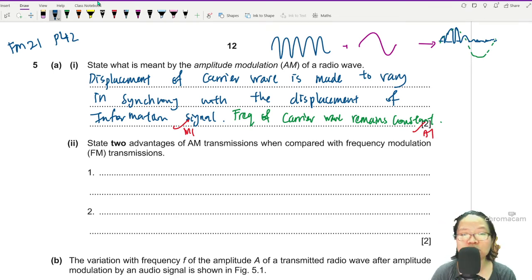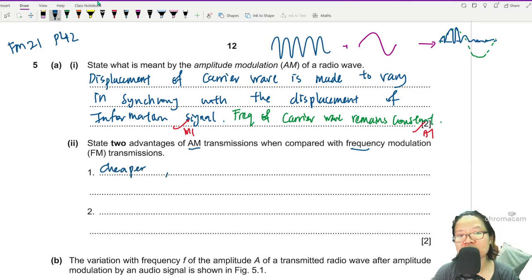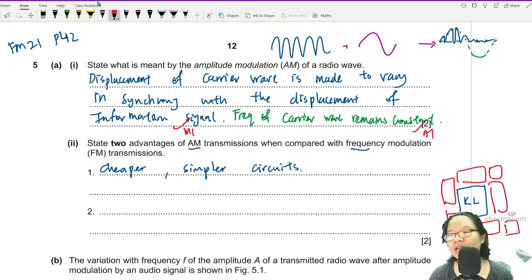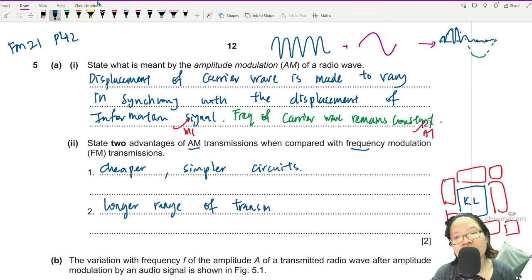What are the advantages of AM transmission when compared to FM transmission? AM transmission is the cheap one, the one you use for walkie-talkie. So the first one, because we can use for walkie-talkie, is cheaper, simpler circuits. And it has a longer range of transmission. The signal can travel far away.